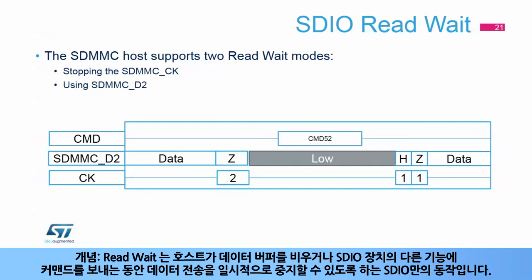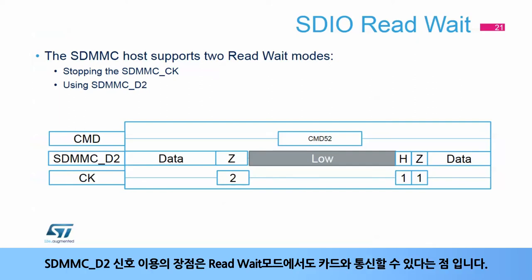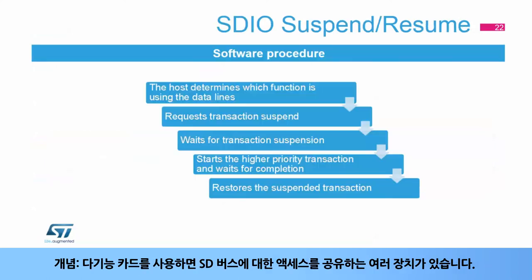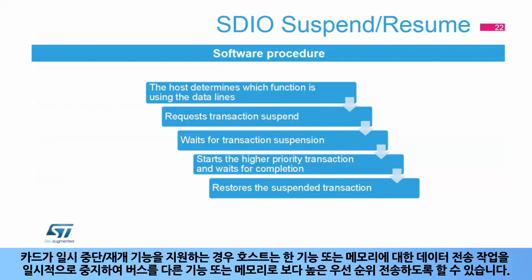The read-wait state operation is an SDIO-specific operation that allows the host to temporarily stall the data transfer while emptying its data buffer or sending commands to other functions of the SDIO device. The SDMMC controller supports two read-wait modes: either by stopping the SDMMC CK or using SDMMC D2 signaling. The advantage of SDMMC D2 signaling is that you are still able to communicate with the card while in read-wait mode. With multi-function cards, there are multiple devices that share access to the SD bus. When the function supports suspend and resume, the host can temporarily halt data transfers to perform other operations or communicate with other functions, then resume the suspended transaction.